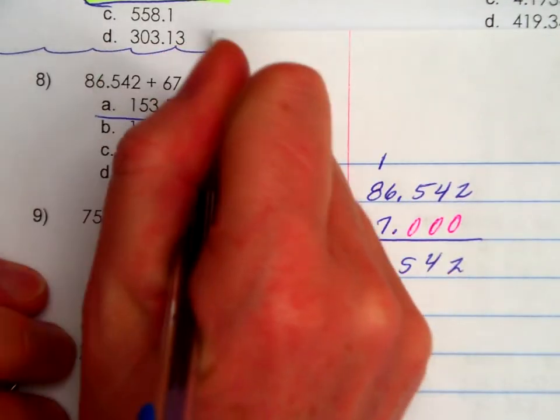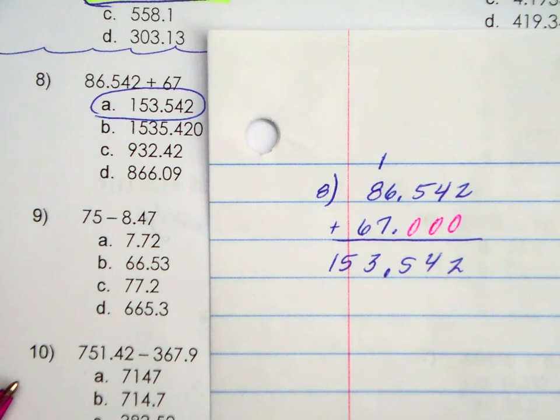And that is A, which we predicted it to be A because the others were far, far too big. Excellent.